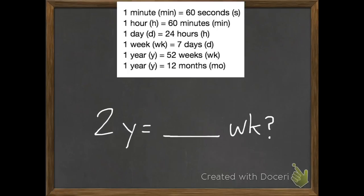Try this one along with me as well. Pause it if you need to, and then unpause it when you're ready to check it. So 2 years equals how many weeks? 52 weeks are in a year, and we have 2. So 52 times 2 equals 104.